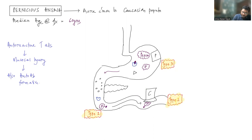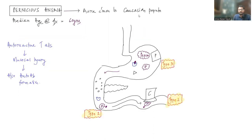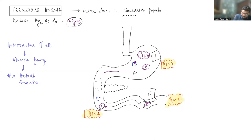Pernicious Anemia is more common in the Scandinavian regions. It is a disease of the elderly. The median age of diagnosis is 60 years, and it is very uncommon in people who are less than 30 years of age.